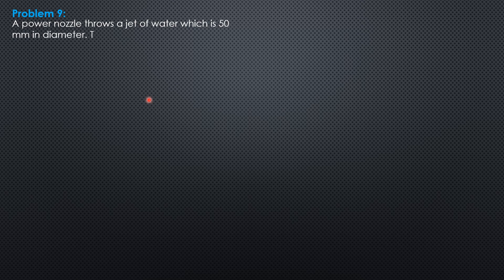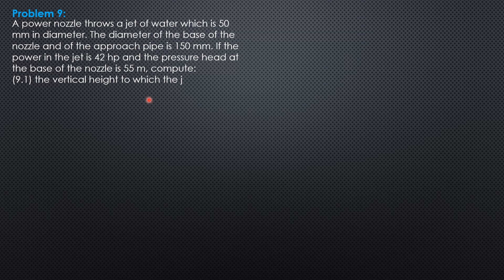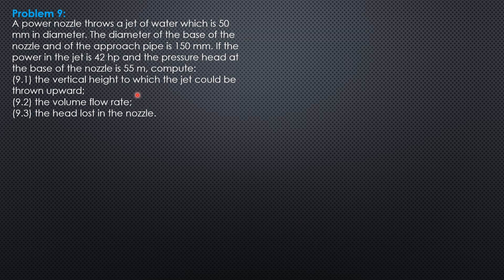Hello everyone, this is project 9. A power nozzle throws a jet of water which is 50 mm in diameter. The diameter of the base of the nozzle and of the approach pipe is 150 mm. If the power in the jet is 42 horsepower and the pressure head at the base of the nozzle is 55 meters,